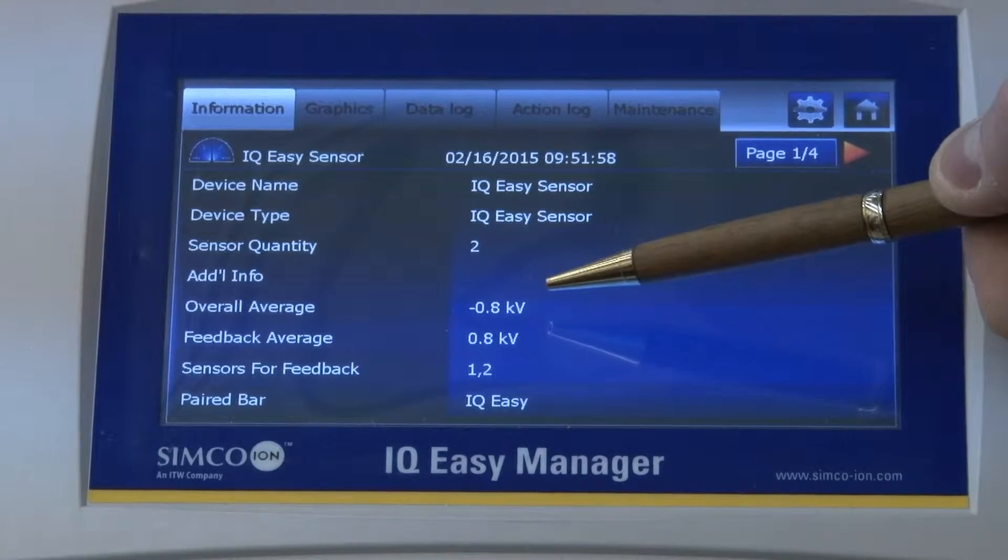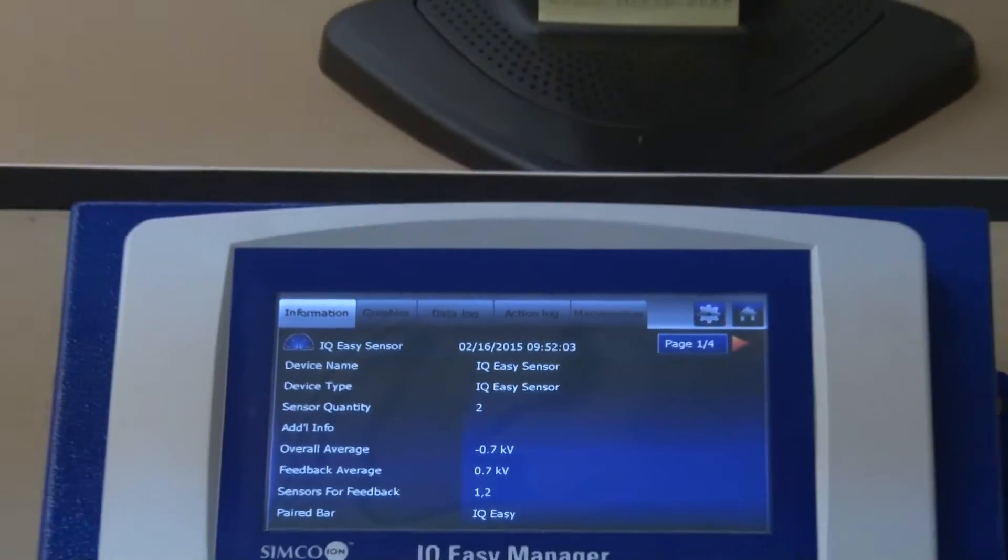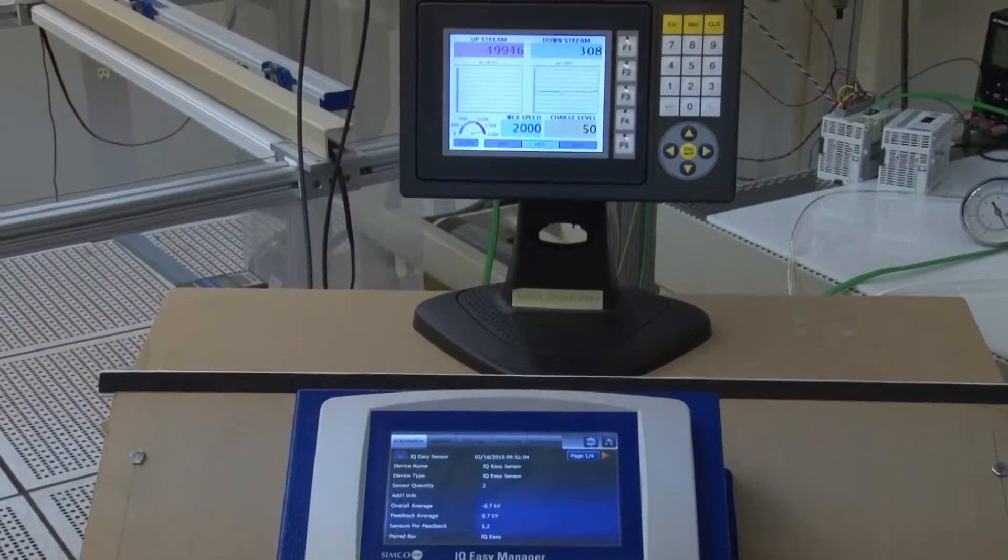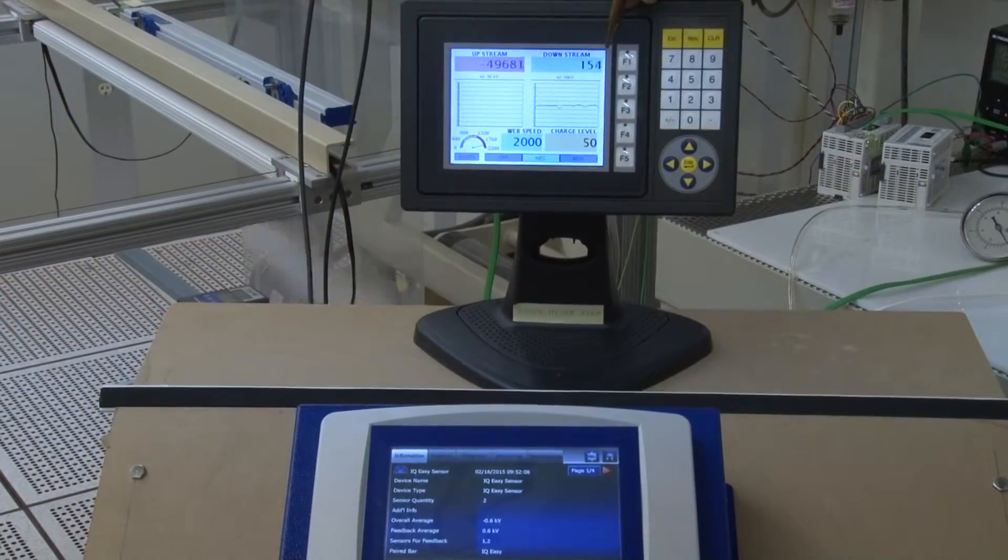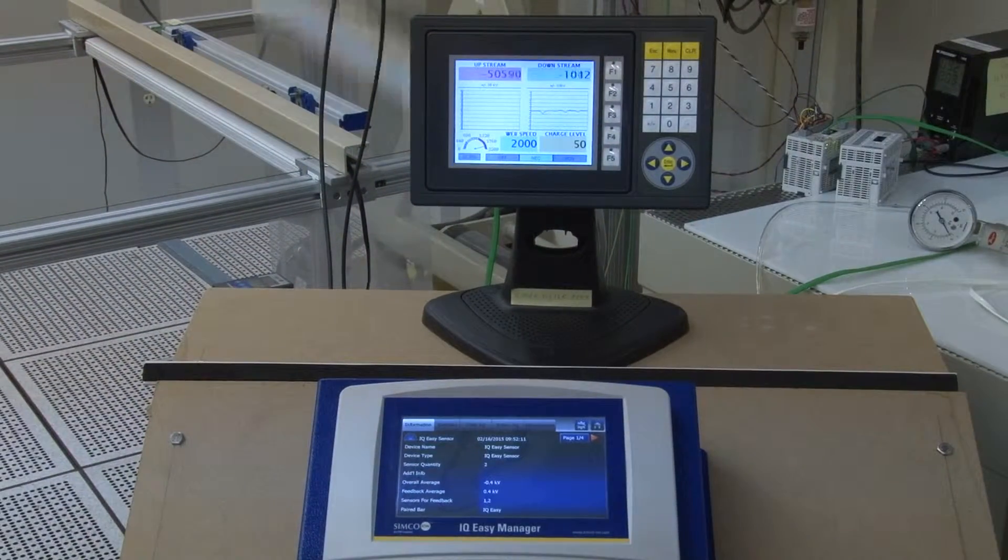Simultaneously with that, our independent FMX monitor, which is shown on our PLC screen, is also reading very, very close to zero now, within a couple hundred volts of zero.